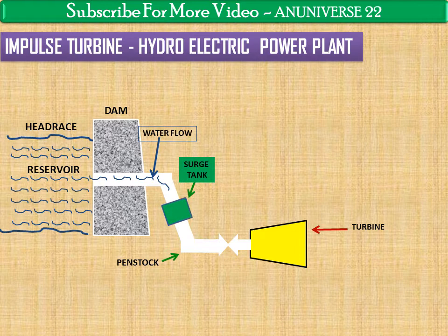This is the surge tank, a main component of the hydroelectric power plant. It is located on the penstock and as near to the turbine as possible. It acts as a temporary storage device to store water when the governor reduces the supply of water to the turbine. On the other hand, if the turbine needs more water, the load on the turbine increases and the excess water is made available to the turbine from the surge tank.